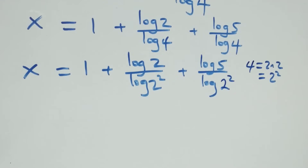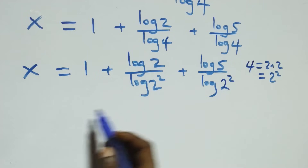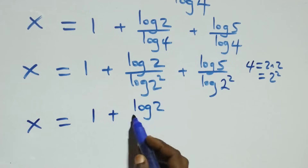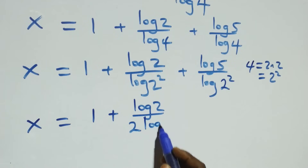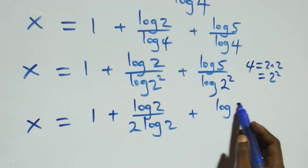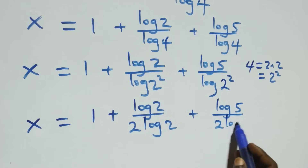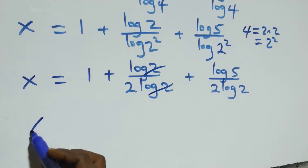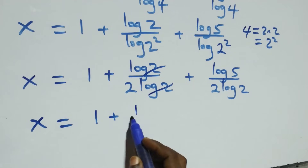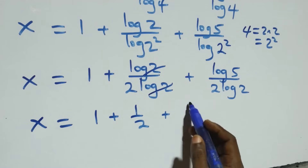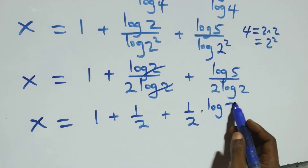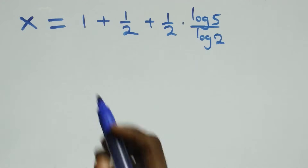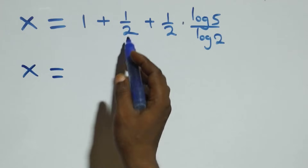The next step is to apply the power rule of logarithm to the denominator. The 2 comes down, giving x equals 1 plus log 2 over 2 log 2, plus log 5 over 2 log 2. Log 2 cancels with each other, so one half is left. This gives x equals 1 plus one half, plus one half times log 5 over log 2.